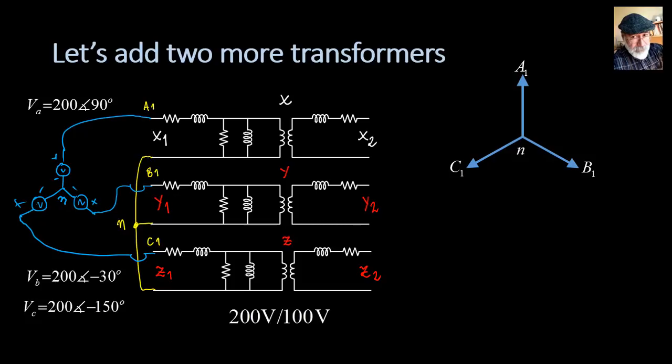Let me connect the three secondaries like this: X2, Y2, and Z2 — joining the non-dots of the three coils. So we have a Y in the primary and a Y in the secondary. This is the neutral of the secondary, this is phase A of the secondary, phase B, and phase C.